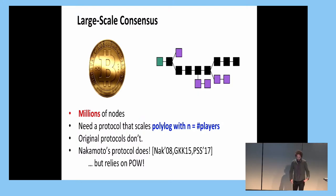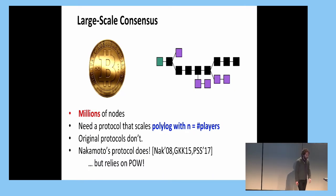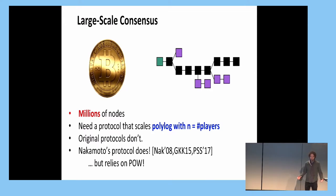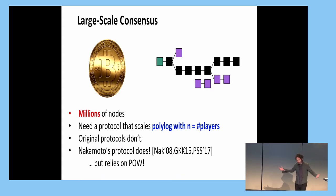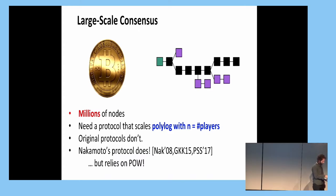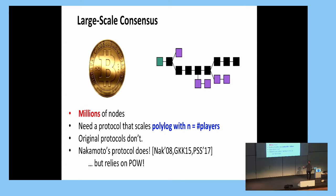By handling a large number of players, I mean that we have a protocol that scales polylogarithmically in the number of players. Nakamoto's blockchain protocol actually does this, which is great, but unfortunately it relies on proof of work — it is very expensive and wastes a lot of computational effort. In fact at the moment it's more than the total solar production in the US.